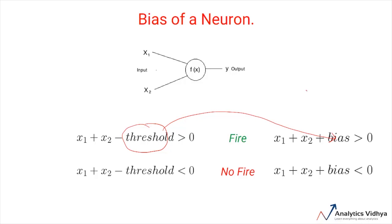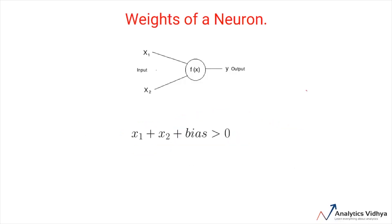Now that we have a good understanding of bias and how it represents the condition for a neuron to fire, let's move to other aspects of an artificial neuron called weights. So far, even in our calculation, we have assigned equal importance to all the inputs. But what if you want to have different weights attached to different inputs? Let's have a look at an example.